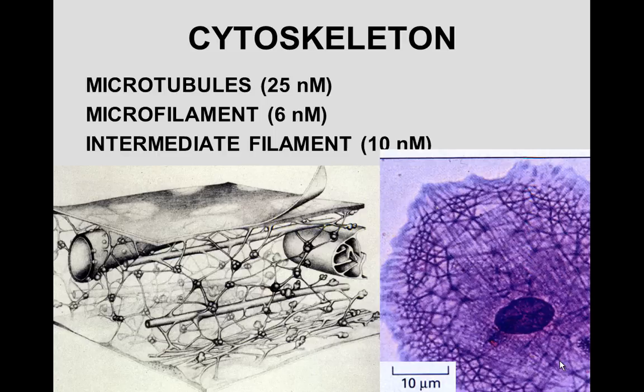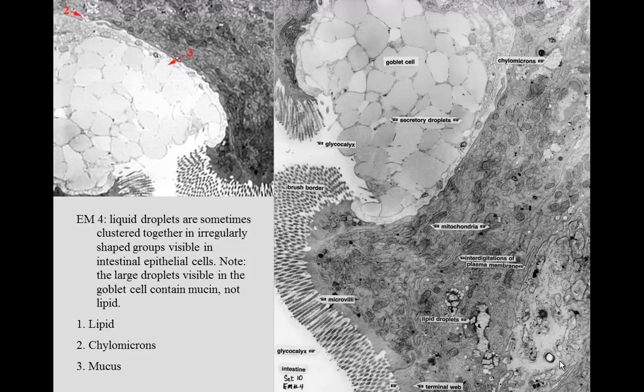If you would take a cell and stain it with Chomyces blue, you would see the network of cytoskeleton components as well as other proteins in the cell.